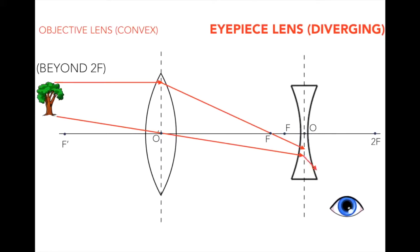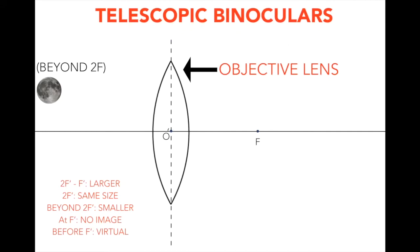Since the human brain cannot accept that light bends, our eyes will extrapolate the light rays to form a magnified, virtual, and upright image. That's exactly what we call a Galilean binocular. Telescopic binoculars were first seen in 1825 when invented by J.P. Lumiere.